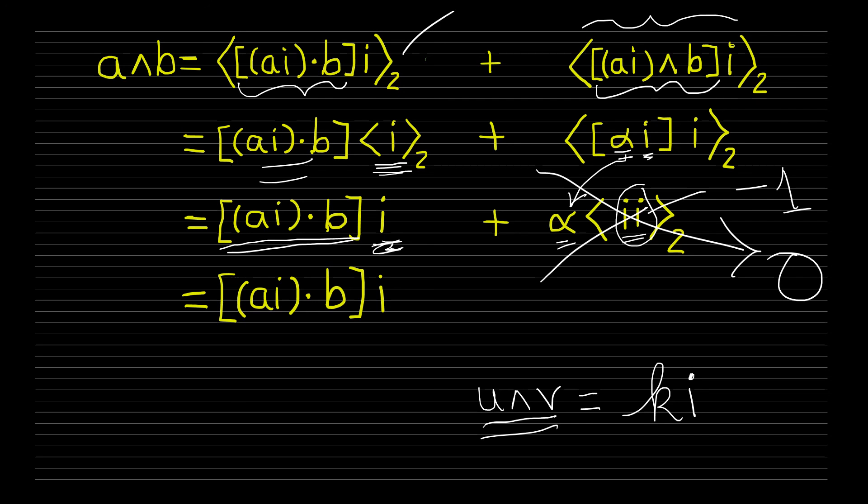So this whole monstrosity here goes away and we're just left with the thing that we were trying to prove, which is that a wedge b is equal to ai dot b times the unit bivector. So I hope this has been helpful. I look forward to your comments. Please look at Peter's channel and I hope that you'll consider joining the group Pre-University Geometric Algebra on LinkedIn. And I'll supply a bunch of links to different resources that may be helpful. Thank you for your time.